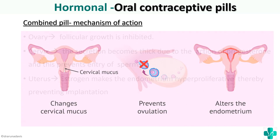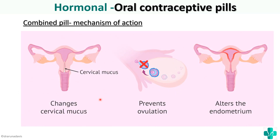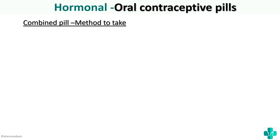Here is a picture showing the cervical changes — the cervical mucus is made thick so that sperms cannot enter the uterus. Ovulation is inhibited so there is no proper ovum. And the endometrium is altered — made hyper-proliferative — so implantation will not occur.